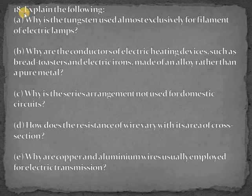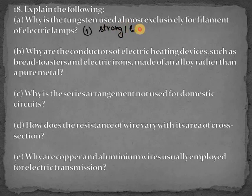It says why is the tungsten used almost exclusively for filament of electric lamps? Why does it use tungsten as a filament? So one of the main reasons is that it has a very strong melting point, actually a very high melting point. This means it can withstand high amounts of electric current. Therefore it is used as filament in electric lamps.